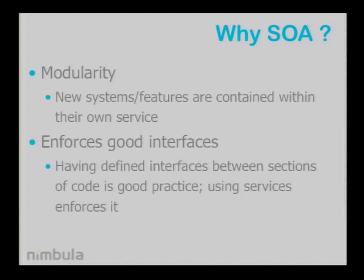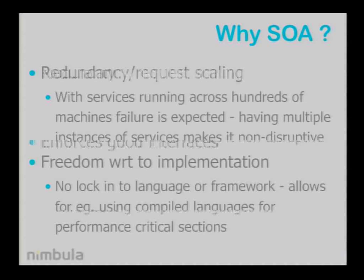SOA also enforces good interfaces. As everyone knows, when you're writing code, it would be very good that everyone defined a clear interface between their areas of responsibility and only ever used that — but that doesn't happen with large development teams. When you're using service-based architecture, it pretty much enforces it, because there's a very well-defined layer of what's exposed to the network and what's exposed to other services. Services also provide a lot of redundancy and scaling opportunities. When you've got hundreds of services running, failure is expected, and having multiple instances of a service which you can bounce a request to makes it non-disruptive. Services also give you a lot of freedom with implementation — you don't need to stick with a specific language or toolkit. If you've got a clearly defined interface, you could switch down to C if you're doing a performance-critical service rather than using Python.